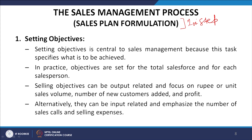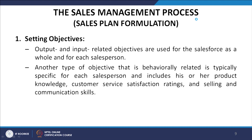Selling objectives can be output-related and focus on rupee or unit sales volume, number of new customers added, or profit. Alternatively, they can be input-related and emphasize the number of sales calls and selling expenses. Output and input-related objectives are used for the sales force as a whole and for each salesperson. Another type — behaviorally related objectives — is typically specific to each salesperson and includes product knowledge, customer service satisfaction ratings, and selling and communication skills.